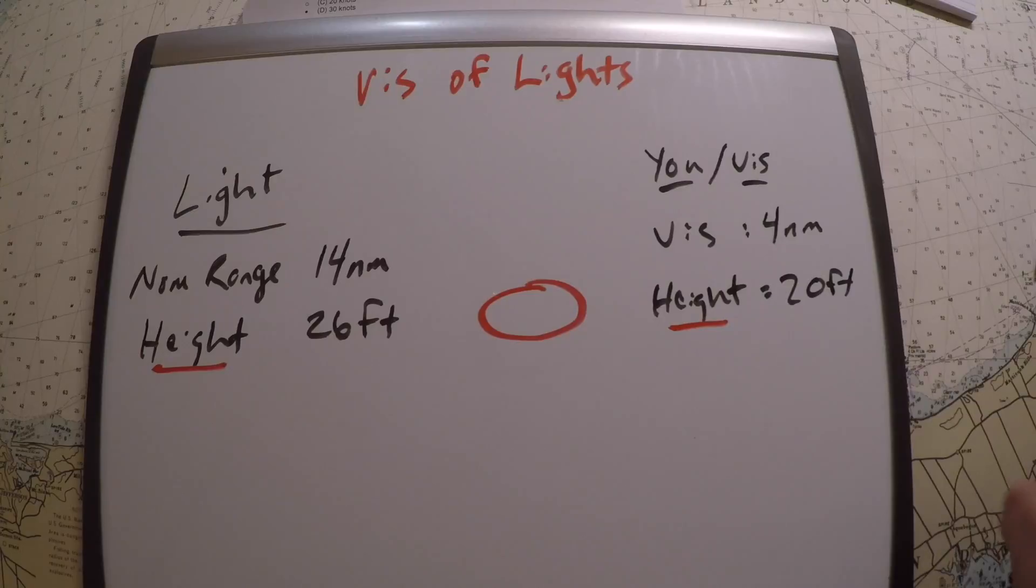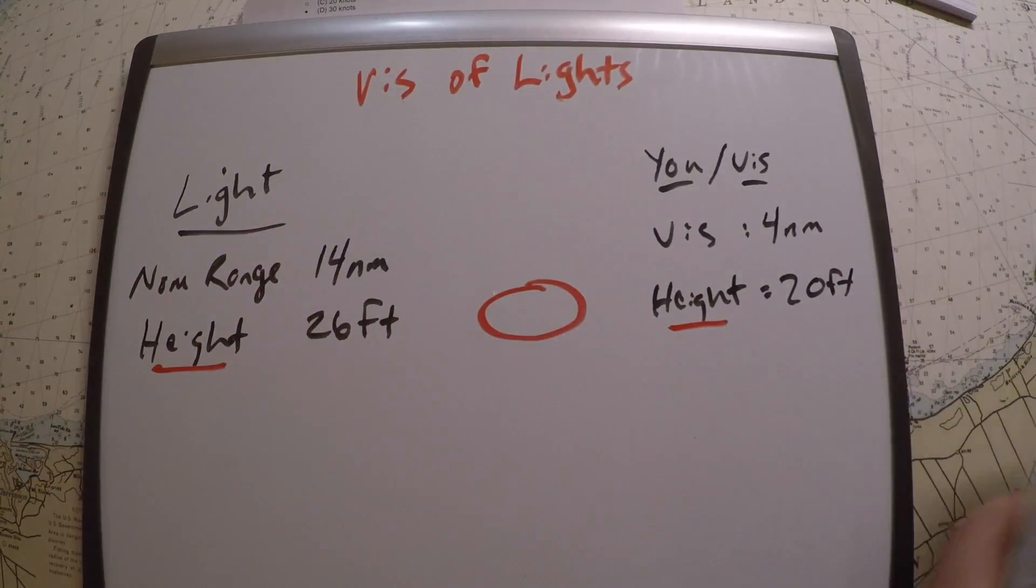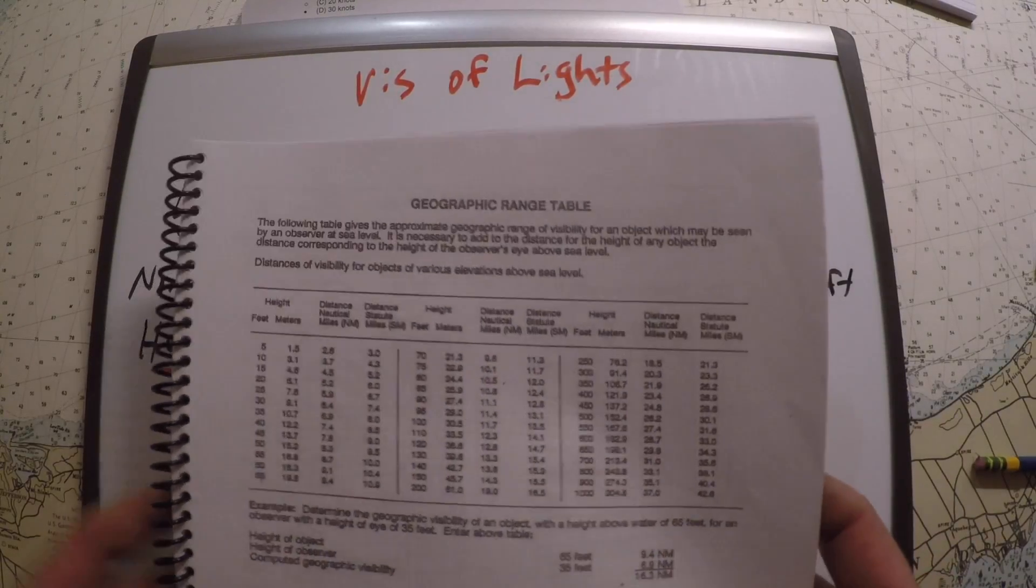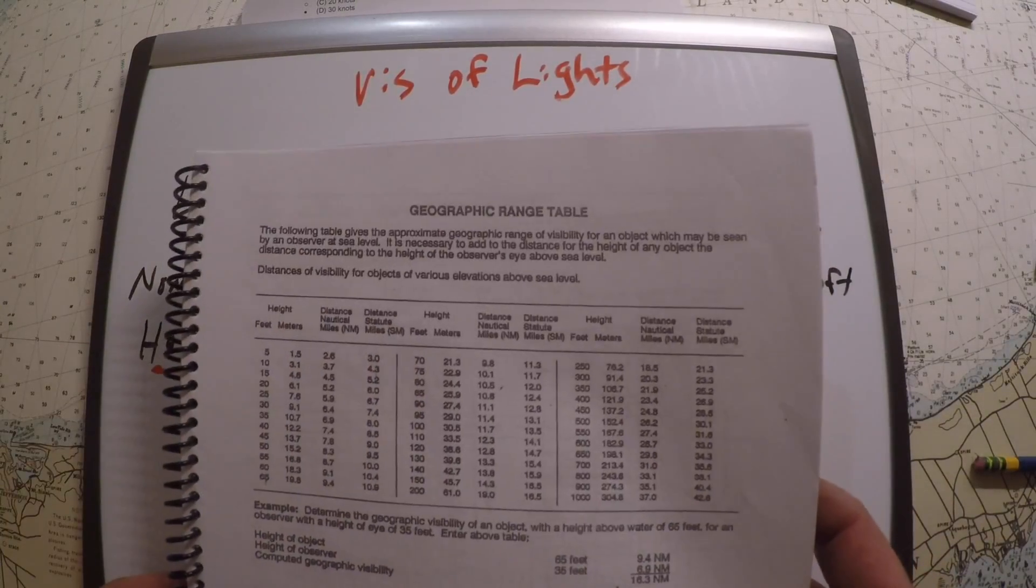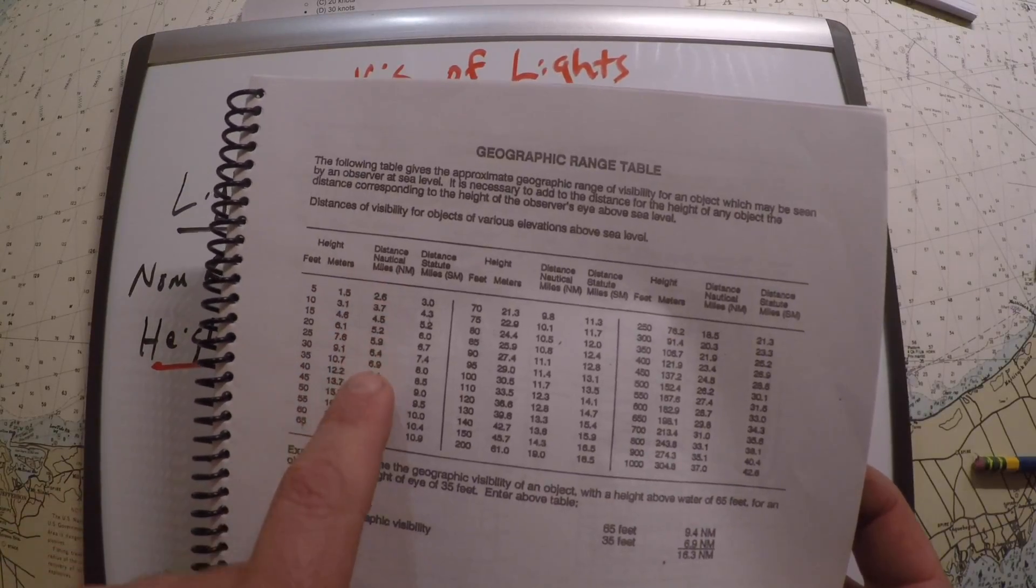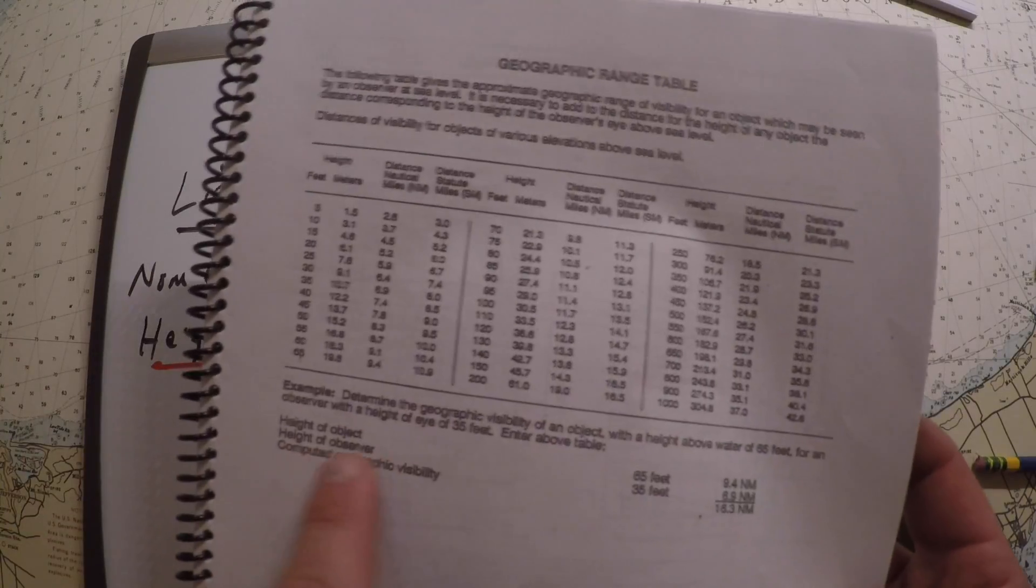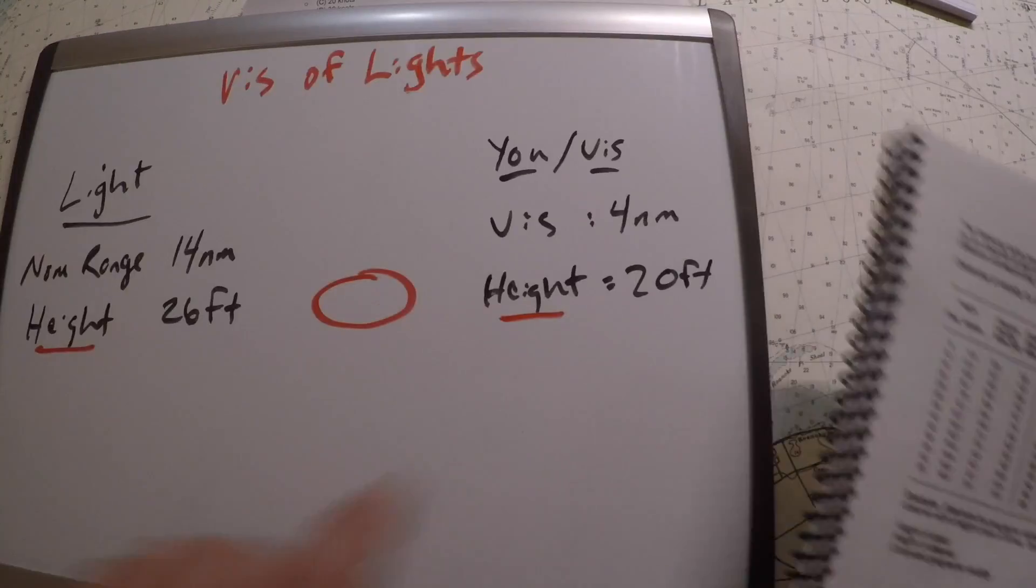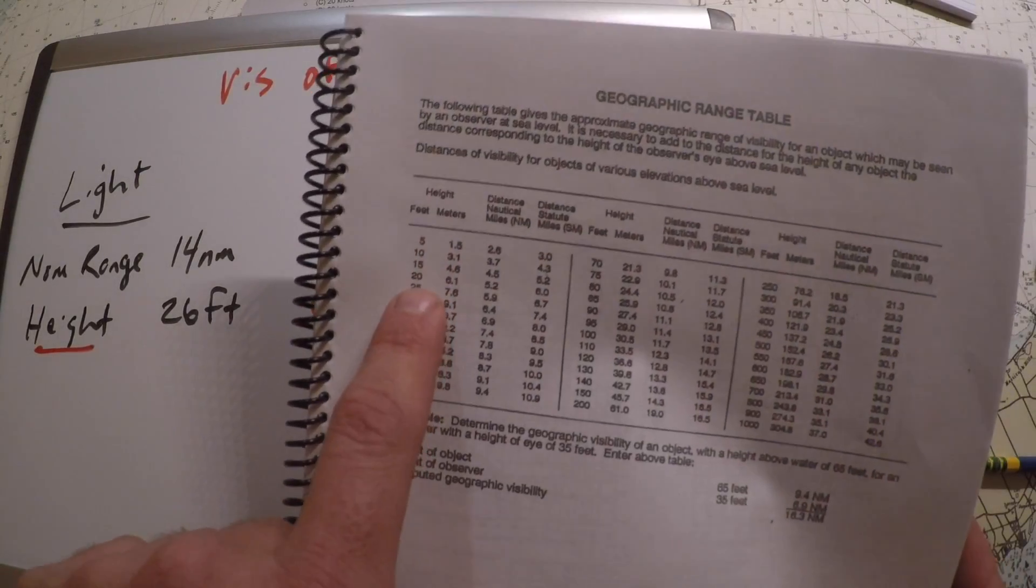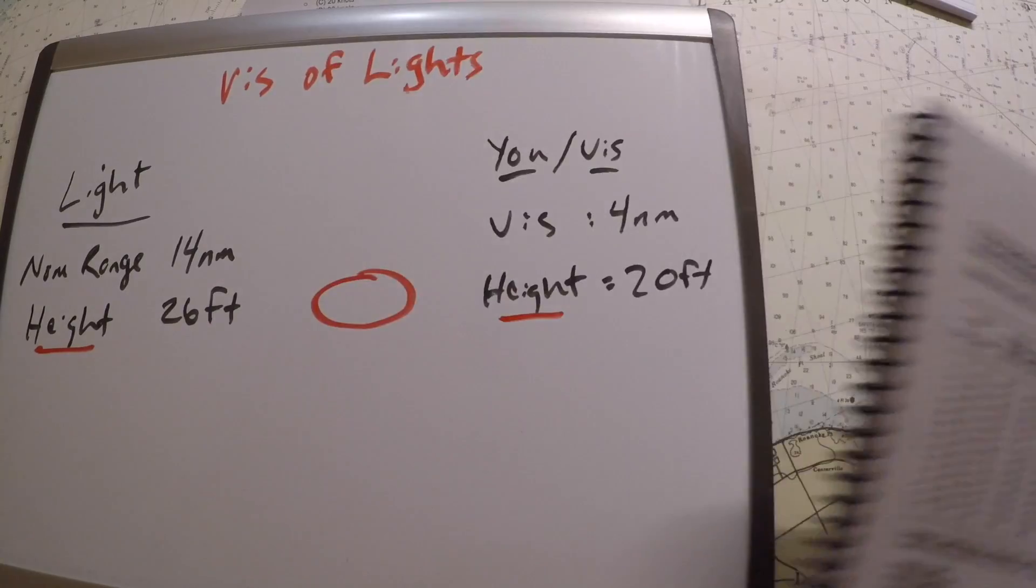The way to do that is in the light list there's a table for geographic range. All the Coast Guard problems are written based on this table. You look up in feet or meters and then it computes the distance to the horizon for you. For us we've got a height of 20 feet, so if we look at 20 feet, that means we have a distance to the horizon of 5.2 nautical miles.